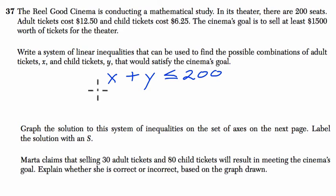Second inequality: it's $12.50 times the number of adults plus $6.25 per child, and we're trying to sell at least $1500, so greater than or equal to $1500 worth of tickets. That's our system.